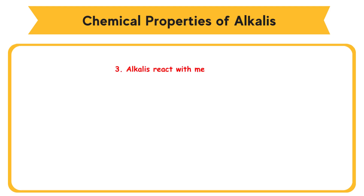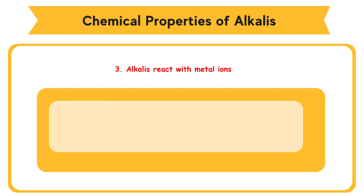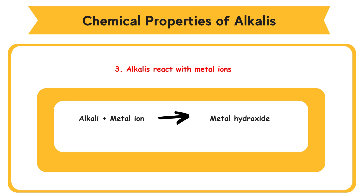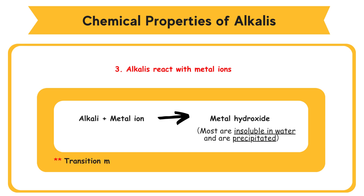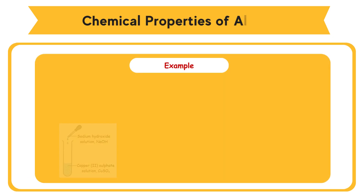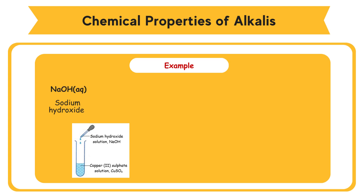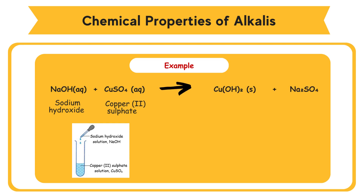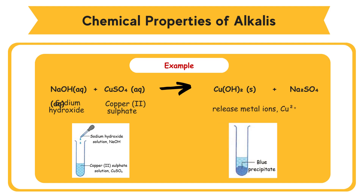3. Alkalis React with Metal Ions. Alkali reacts with Metal Ions to form Metal Hydroxides. Most Metal Hydroxides are insoluble in water and are precipitated. Transition Metal Ions form Colored Precipitates. Example: Sodium Hydroxide, NaOH, reacts with Copper(II) Sulfate, CuSO4, to form Copper(II) Hydroxide. Copper(II) Hydroxide is insoluble in water, releasing Metal Ions, Cu2+.